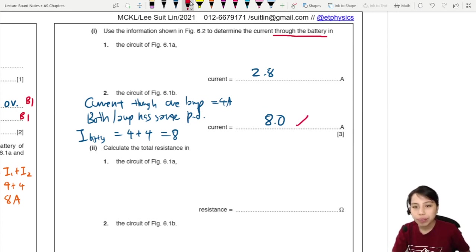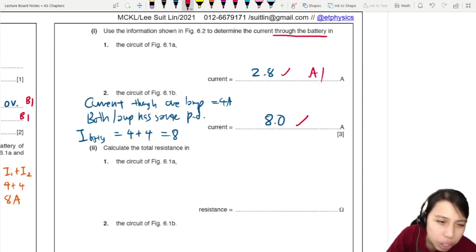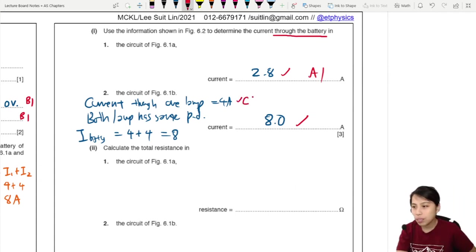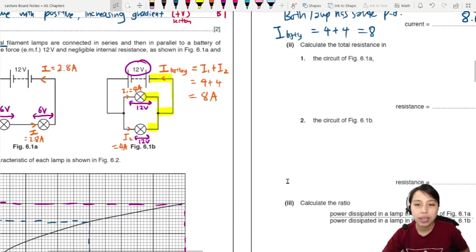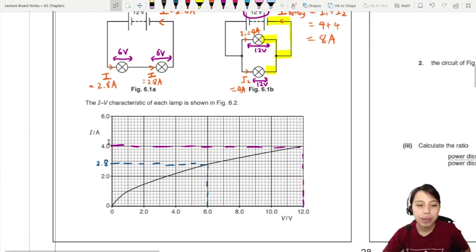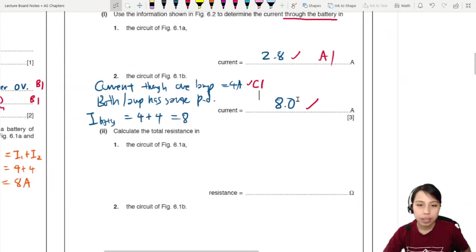The first one, 2.8. I think that's pretty much straightforward. Just the A1. The second one, there's actually two marks. If you got mentioned somewhere that each lamp has 4 amps, that's C1. Or you draw on the graph and you label it like what we did just now. C1 and then final answer A1. Three marks.